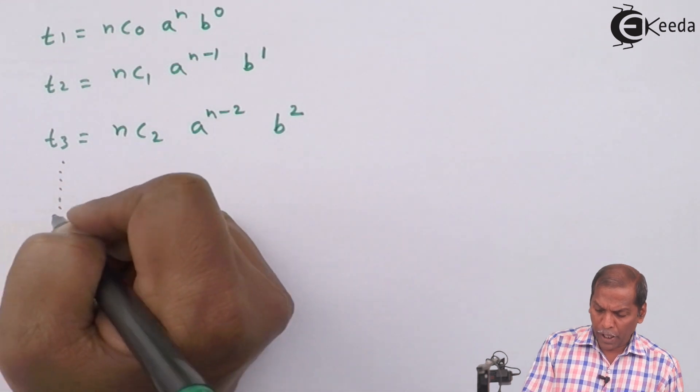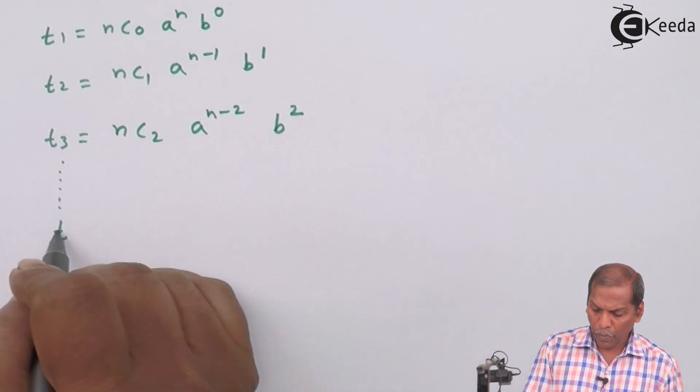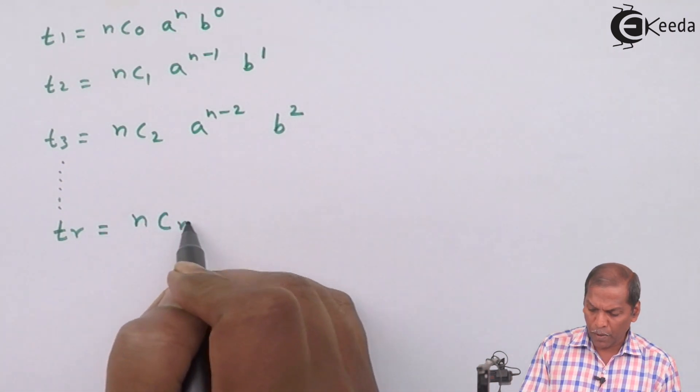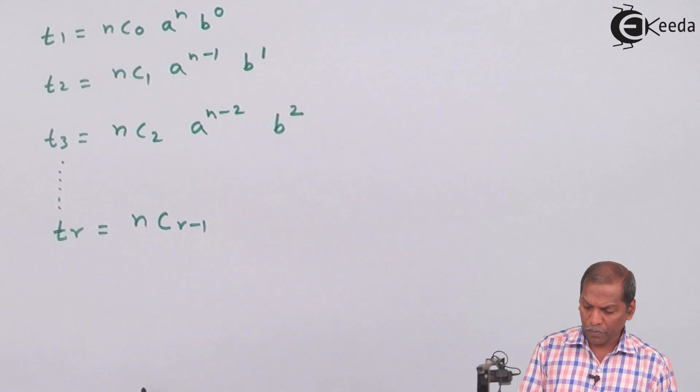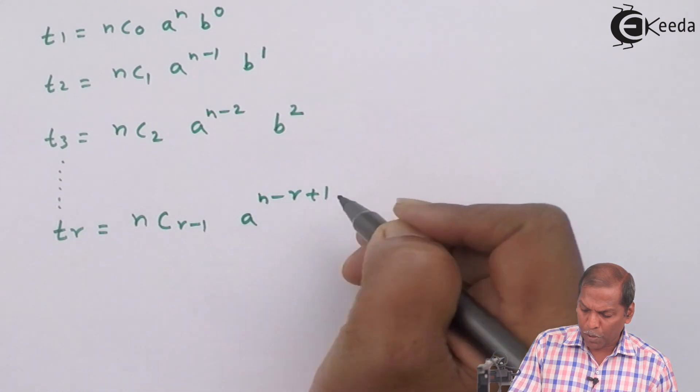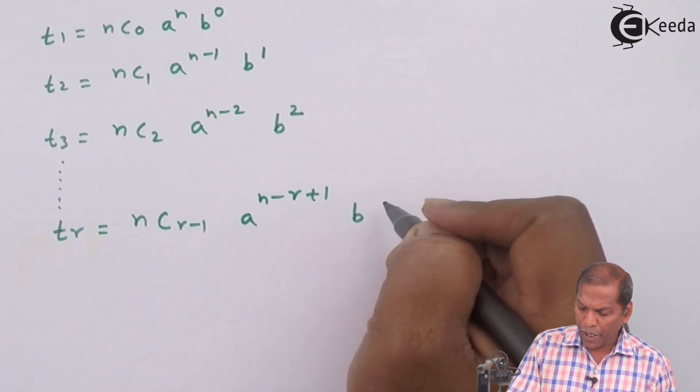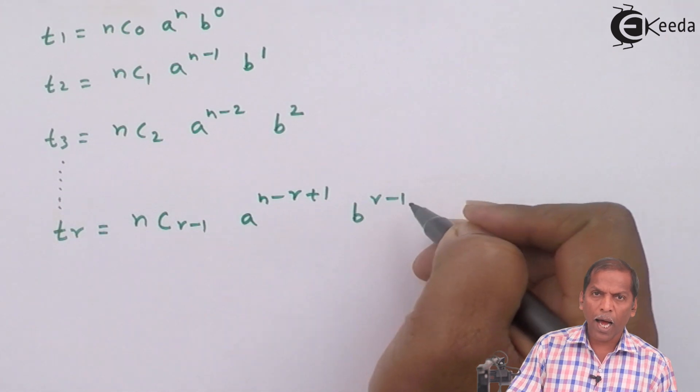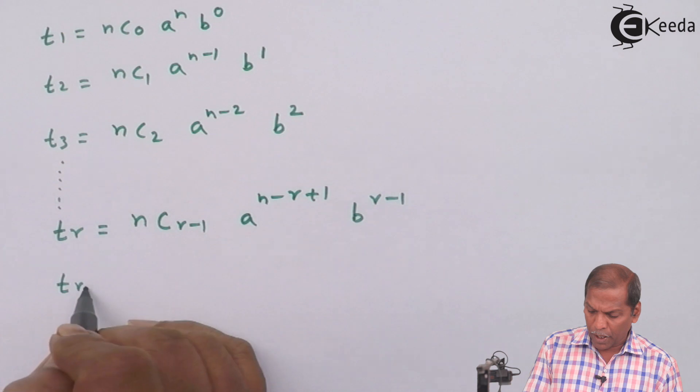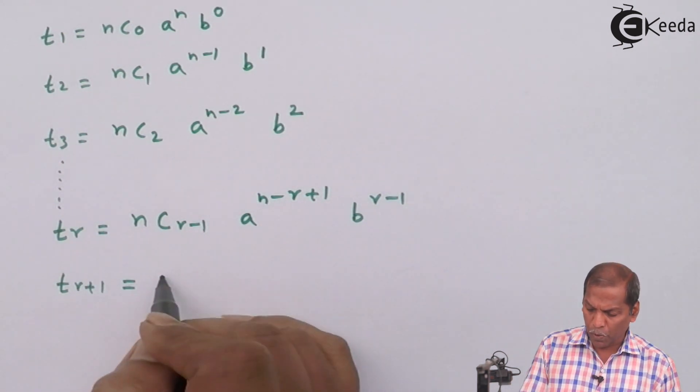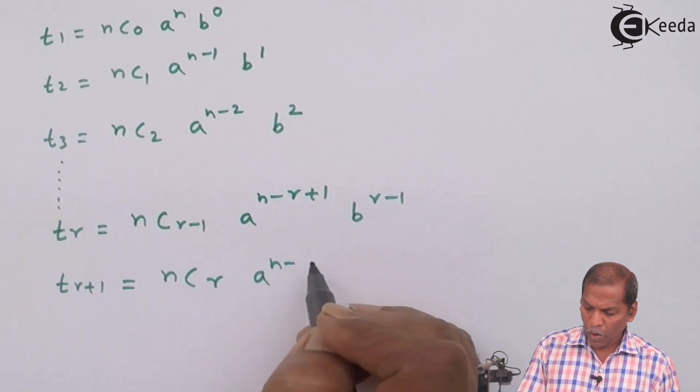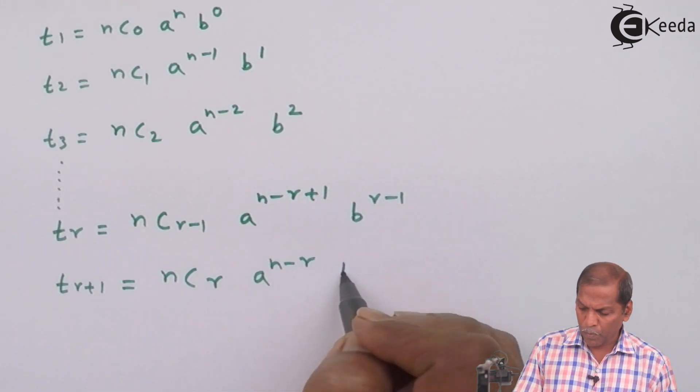Continuing in this manner, we write Tr as nCr-1 A to the power n minus r plus 1 and B to the power r minus 1, and finally Tr+1 is equal to nCr A to the power n minus r into B to the power r.